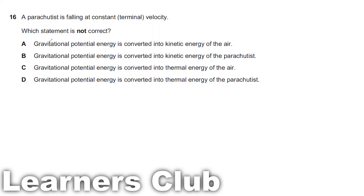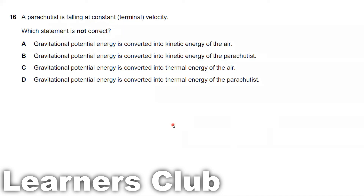Option A says gravitational potential energy is converted to kinetic energy of the air — this is possible due to air resistance opposing the fall, so it is correct. Option B says gravitational potential energy is converted to kinetic energy of the parachute — since the parachute moves at constant velocity, its kinetic energy does not change. So option B is the incorrect statement. The answer for Question 16 is option B.